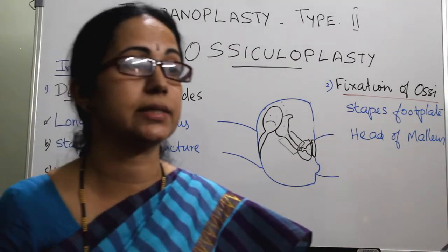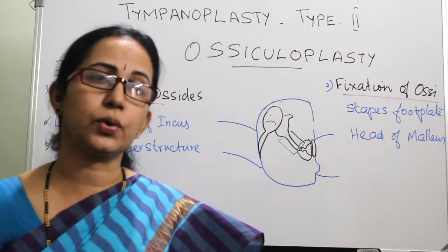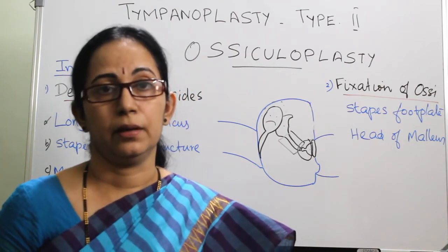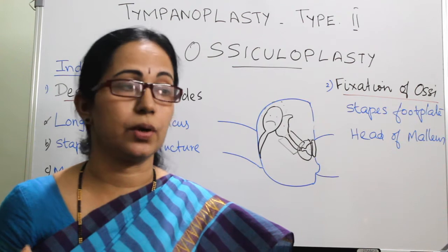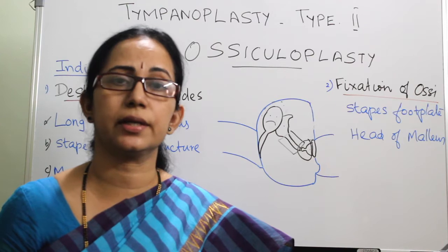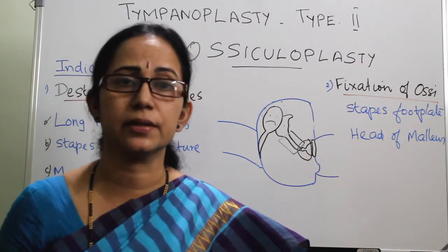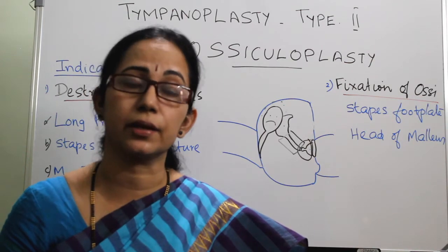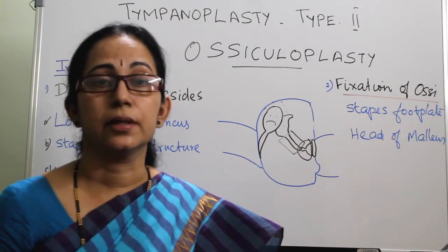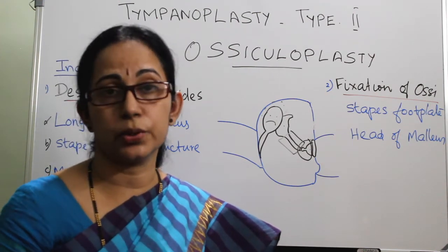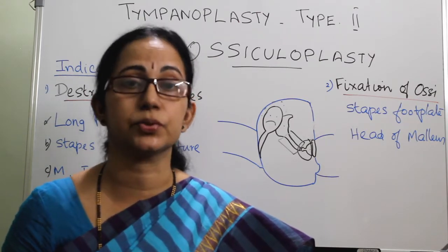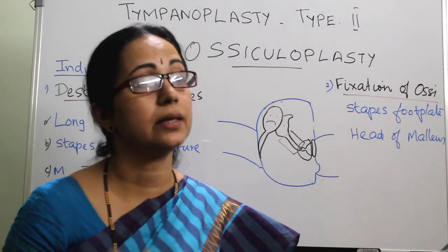The absolute contraindication is only one: acute infections of the ear, as in all other cases of tympanoplasty. The relative contraindications are medical conditions which make the patient unfit for surgery, like uncontrolled diabetes, uncontrolled hypertension, or cardiac problems. Then repeated ossiculoplasty in which each time there is failure — better to go for alternative procedures like a hearing aid.